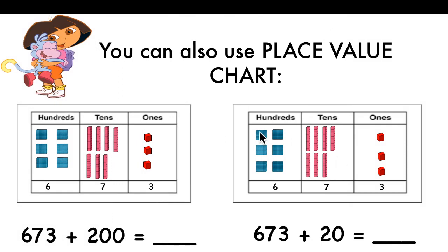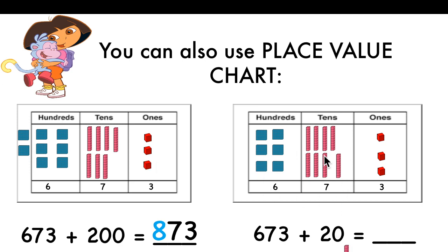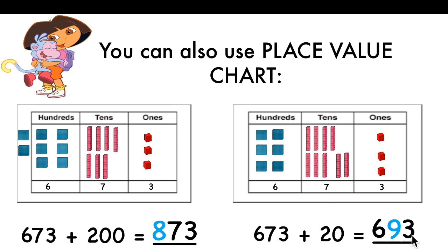You can also use a place value chart. 673. When you're adding hundreds, you add and change only the hundreds digit. 6 plus 2 will be 8 — 873. The tens and ones stay the same. When you're adding tens, the tens digit will change. The hundreds digit and ones digit will stay the same. So 7 plus 2 equals 9; 7 will change to 9, and 6 and 3 will stay the same. Only the tens digit will change.